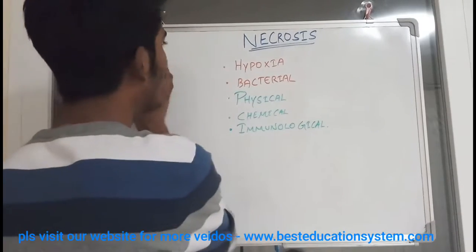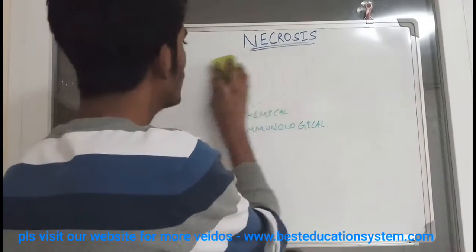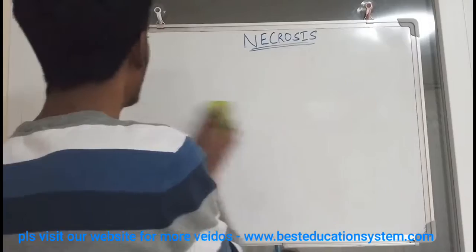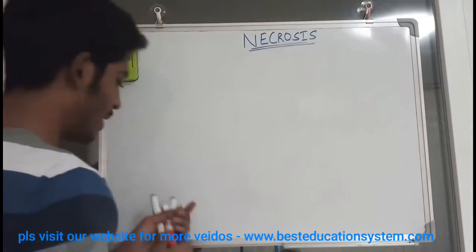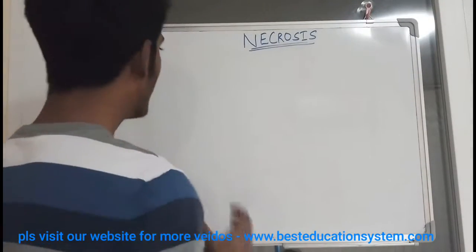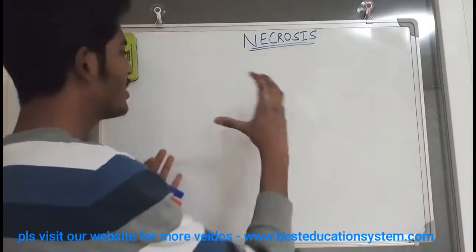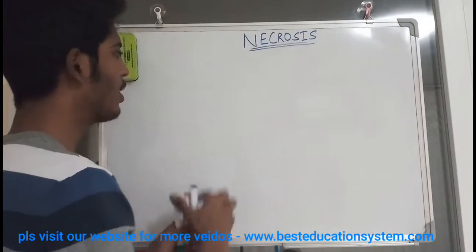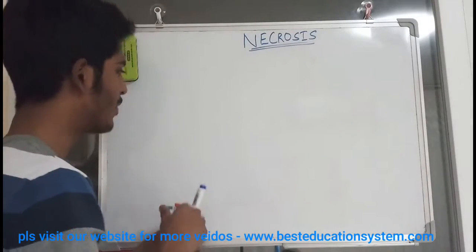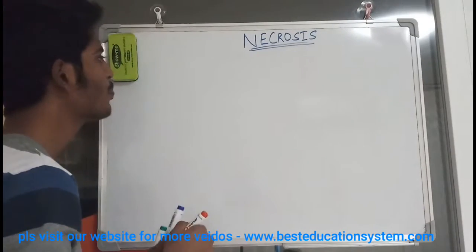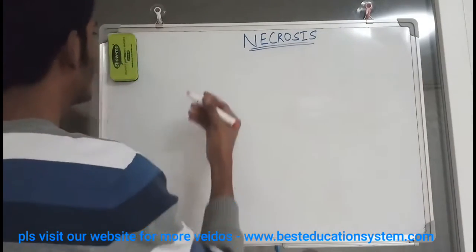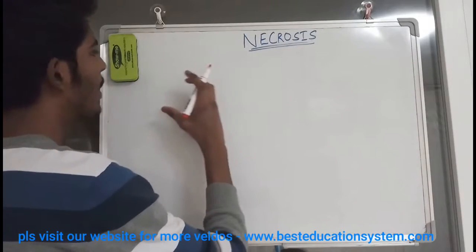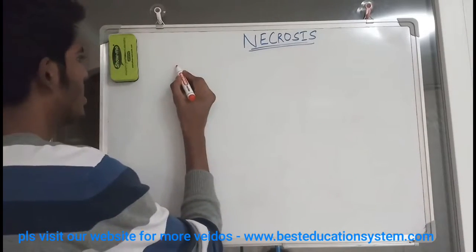So I would like to discuss about what happens during necrosis. We have a classification of necrosis, but the process of necrosis goes in the same particular order for every type of necrosis. So we will start with what are the stages of necrosis.